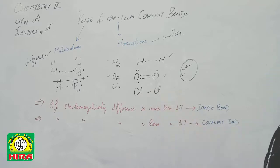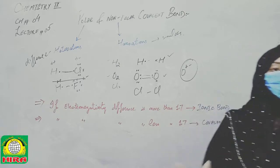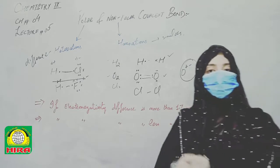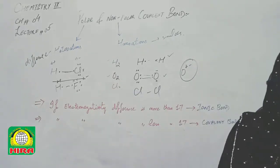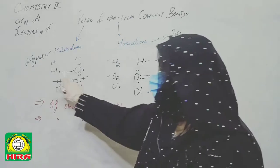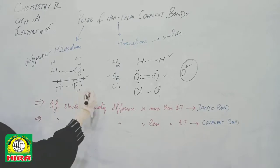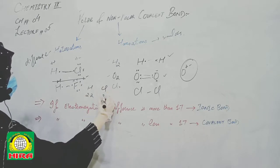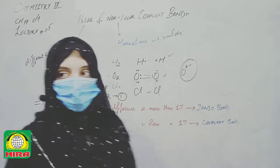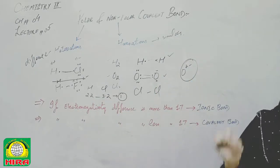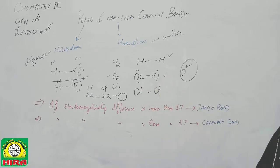Similarly, Cl2 and F2 involve homo atoms, so they are non-polar. When both atoms are the same, each has the same electronegativity, so neither attracts the electrons more than the other — resulting in zero electronegativity difference. In contrast, for polar bonds like HCl, hydrogen has an electronegativity of 2.2 and chlorine has 3.2, giving a difference of 1.0, which confirms the polar nature of the bond.